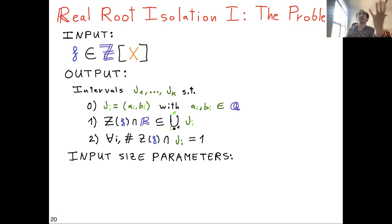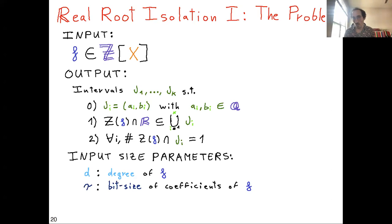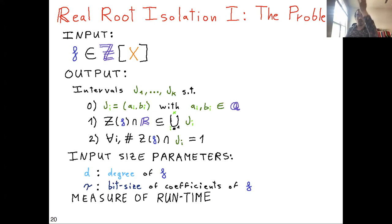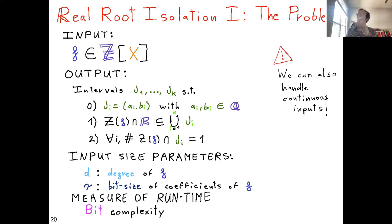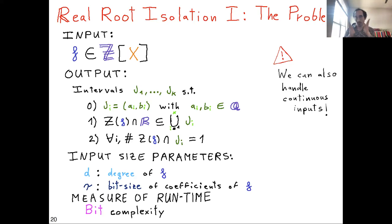The input size parameters are the degree D, which roughly gives the number of coefficients, and tau, the bit size of the coefficients — how many bits are needed to write them. We use bit complexity as our runtime measure. I'll focus on the integer coefficient case since it has fewer technicalities, though the analysis also extends to real coefficients.